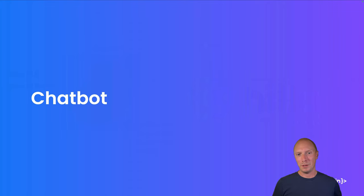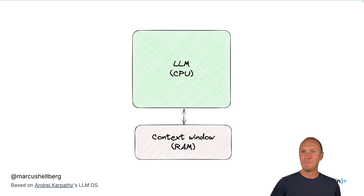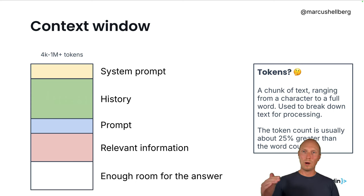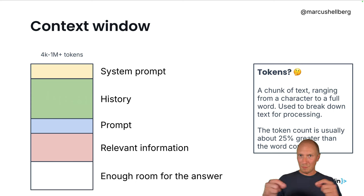Let's take a look at building a chatbot. Using our computer architecture analogy, that means working with the LLM together with a context window — the working memory we have available. The context window is where we need to fit everything relevant: the system prompt (in our previous example, instructing ChatGPT to act as a radiologist), the entire history of our chat because the LLM does not maintain state internally, and the current prompt.